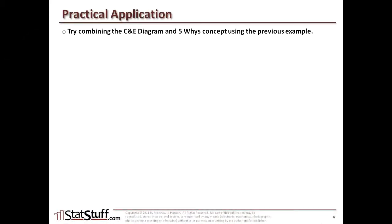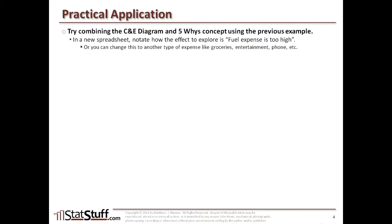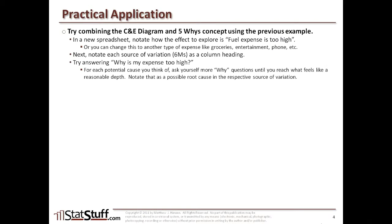Before we close this lesson, let's discuss how to apply some of these concepts in a practical way. Try combining the CNE diagram and five whys concept like we showed in this previous example. Start by taking a new spreadsheet and notate the effect as something like fuel expense that is too high, or change it to something more relevant — like grocery expenses, entertainment expense, or phone expense. Then notate each source of variation as a column heading, using the same six Ms or different variations. Ask yourself why is my expense too high, and for each potential cause, ask more why questions until you get to some reasonable depth. Notate that as a possible root cause within the respective source of variation, and repeat until you've explored all possible causes related to that overall undesirable effect.